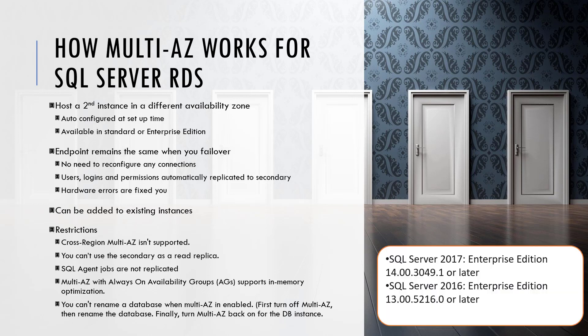If you're on SQL Server 2017 Enterprise Edition 14.00.3049.1 or later, or 2016 Enterprise Edition 13.00.5216.0 or later, then you will be using Availability Groups to provide your Multi-AZ functionality. If not, it's going to be using Database Mirroring. If you're on an instance that has mirroring and you're now eligible for Availability Groups, you can make that change if you so desire.